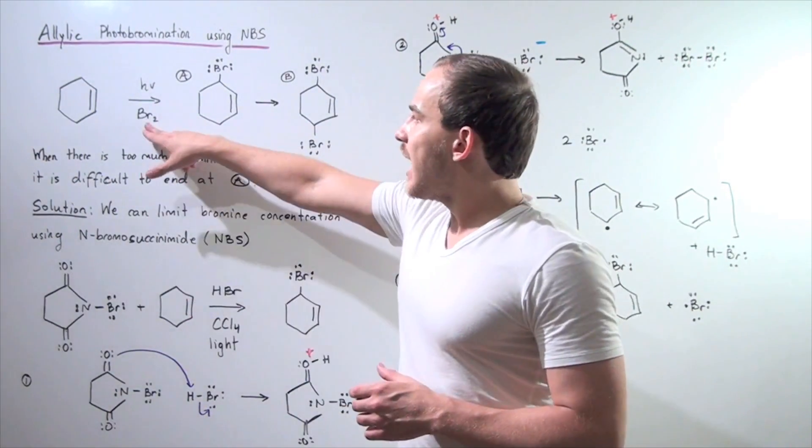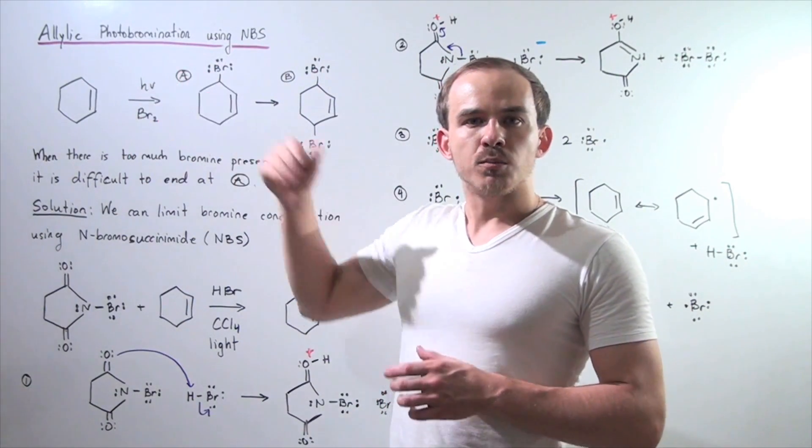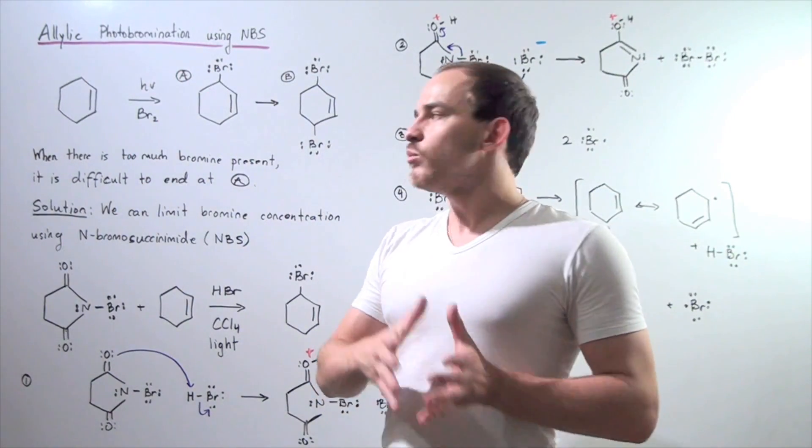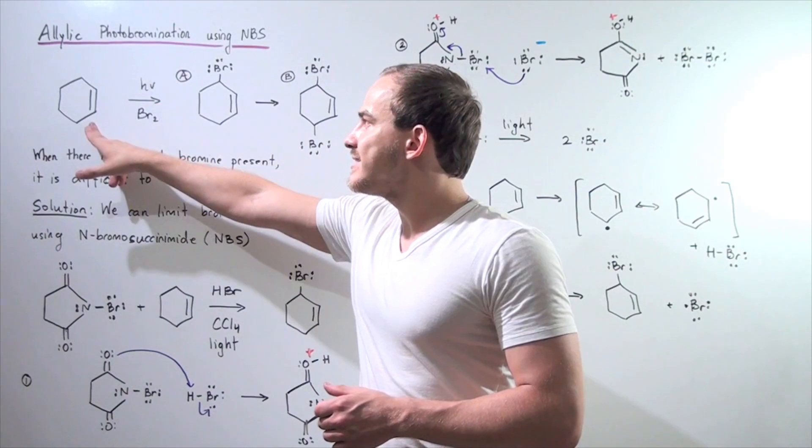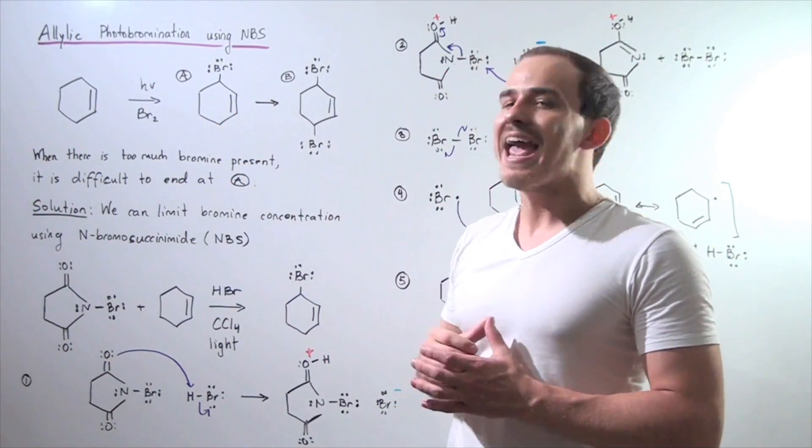Well, if we take diatomic Br2, so our bromine molecule, and we react it with this cyclohexene in the presence of light, we produce product A.